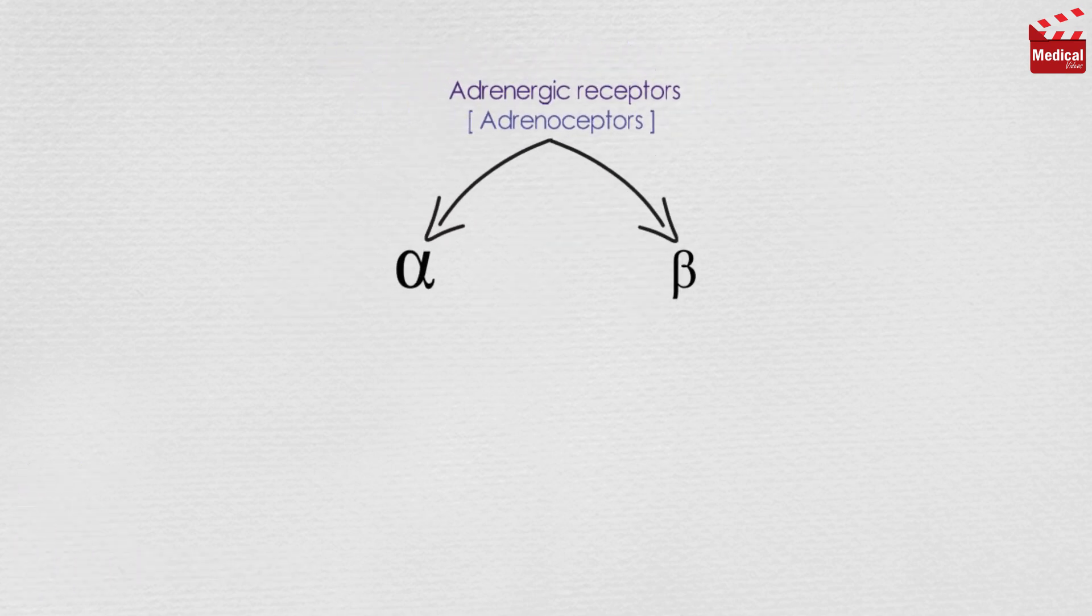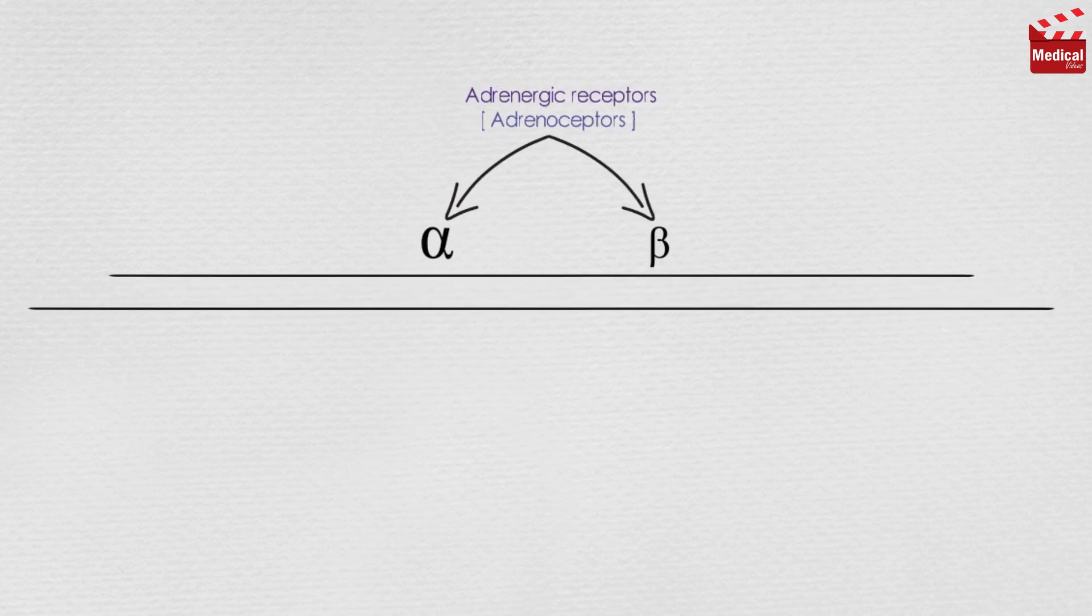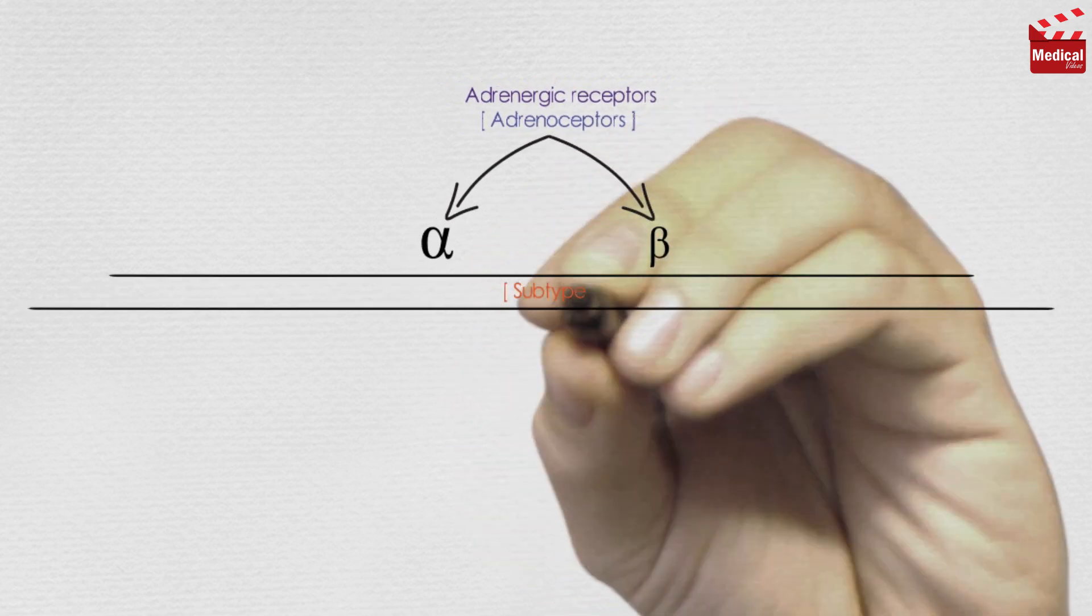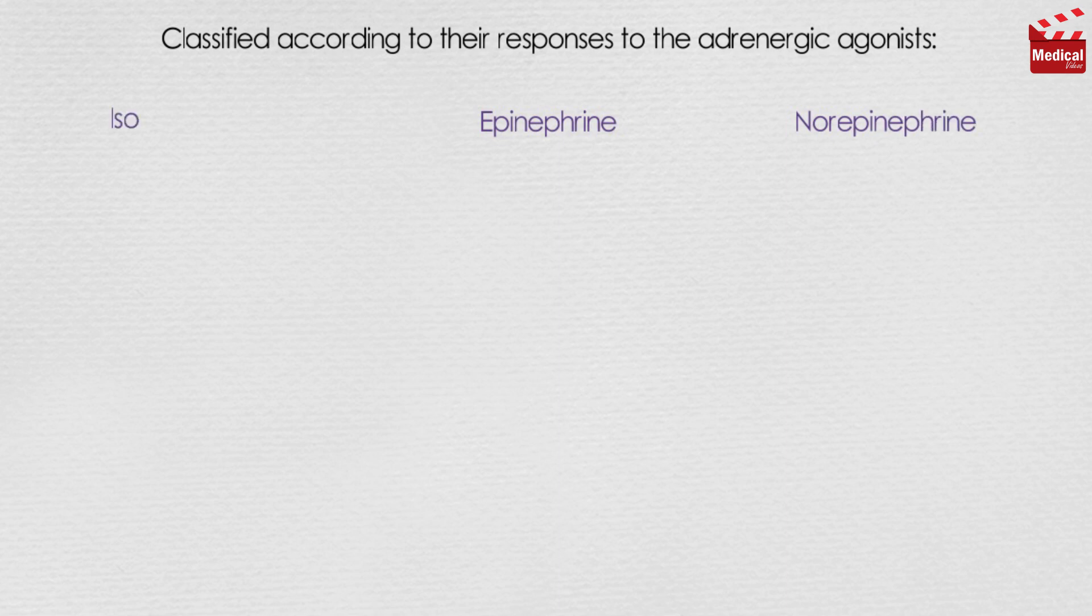Each of these receptor types has a number of specific receptor subtypes that have been identified. They are classified according to their responses to the adrenergic agonists: epinephrine, norepinephrine, and isoproterenol.